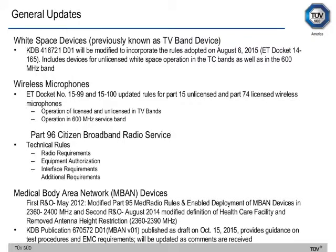Other significant device updates include white space devices — previously known as TV band devices — with KDB 416721D01 being modified to incorporate rules adopted August 6, 2015, covering unlicensed white space operation in TV bands and the 600 MHz band. For wireless microphones under ET Docket 1599 and 15100, rules were updated for Part 15 unlicensed and Part 74 licensed wireless microphones, covering operation in TV bands and the 600 MHz service band. For Part 96 Citizen Broadband Radio Service, there are also updates on technical rules and radio equipment authorization interface requirements.